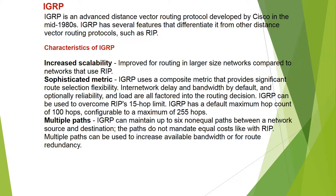IGRP uses a sophisticated composite metric that provides significant route selection flexibility. Internetwork delay and bandwidth are used by default; optionally, reliability and load are also factored into the routing decision. IGRP can overcome RIP's 15-hop limit.